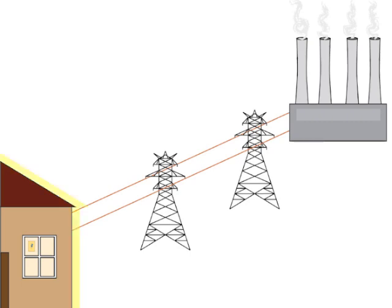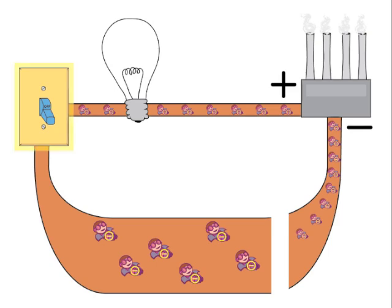Electricity in your house usually comes through copper wires which are connected to a power station. These wires form closed circuits which carry electricity. Before a switch is turned on, a circuit is not complete, and the free electrons in the copper are moving around randomly.